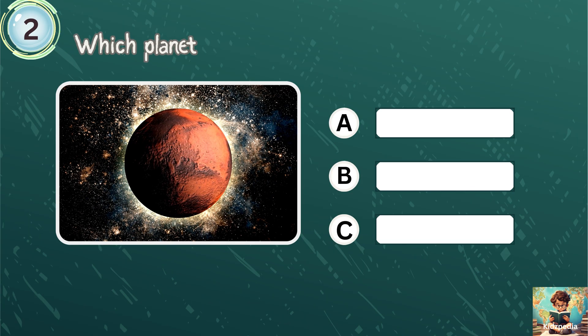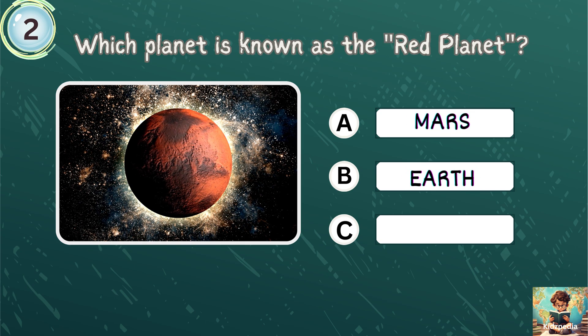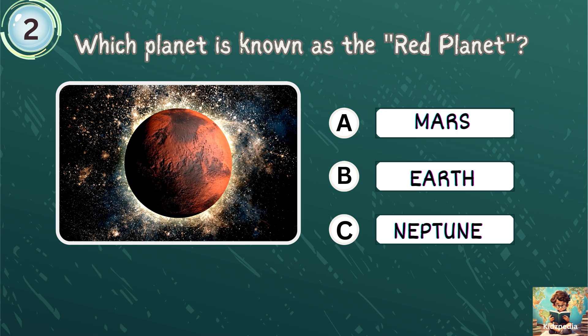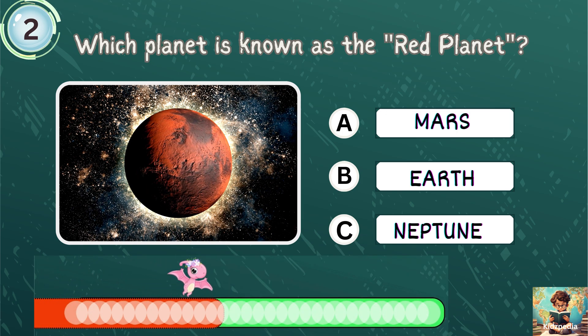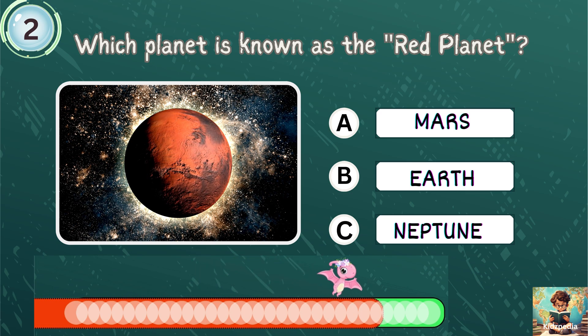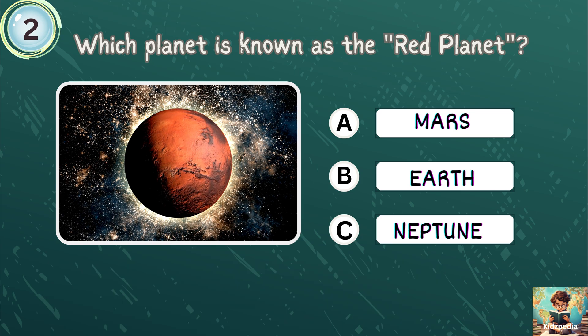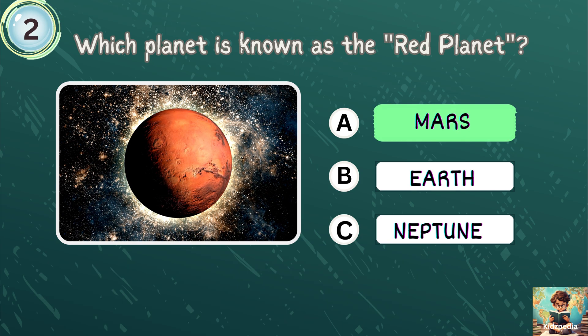Which planet is known as the red planet? Mars, Earth, Neptune. Correct answer is Mars. Mars is known as the red planet.